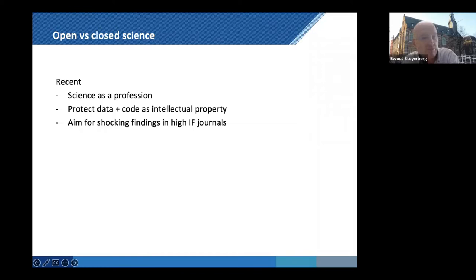More recently, there is science as a profession. You become a scientist and get employed, you get a salary. With that comes larger scale issues on protection of data, especially in epidemiology, and also the code. Sometimes people see that as intellectual property. The ambition is really to have some shocking findings, surprises, something new published in a high impact factor journal.